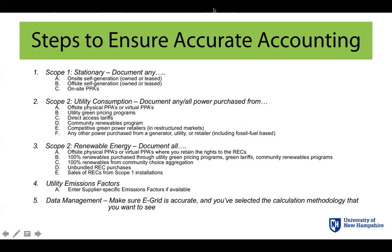There are essentially five basic steps that you need to do, and we're going to walk through each of them. There may be some steps for looking at your scope 1 stationary inputs depending on what your power profile is. There will be steps for your scope 2 utility consumption inputs, and if you participate in renewable energy markets or make renewable energy purchases, or have supplier-specific emissions factors, you're going to enter those in step four. Then there's a data management step on the back end we'll talk about as well.